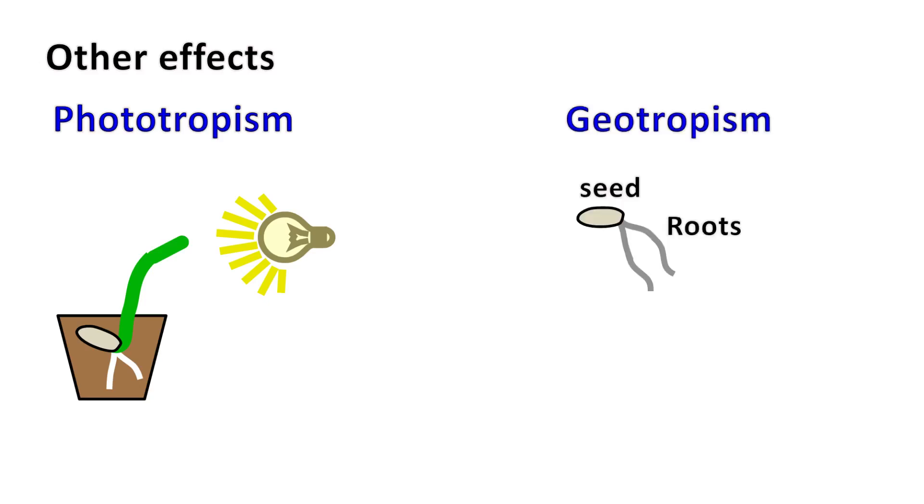Phototropism is a phenomenon in which the plant moves towards the light, whereas geotropism is a phenomenon in which the root moves towards gravity.